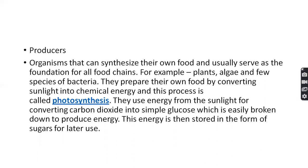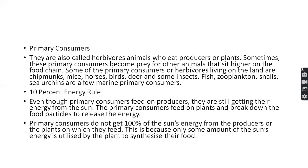Producers use sunlight energy and reduce carbon dioxide to form carbohydrates — nothing but glucose. Glucose is easily broken down to release energy, and some energy is stored for future use. Primary consumers are herbivorous animals that depend on producers. They are also prey to other animals. Examples include deer, which eat grass; deer are then eaten by lions or tigers. Other herbivores include chipmunks, mice, horses, birds, deer, some insects, fish, zooplankton, snails, and sea urchins as marine primary consumers.